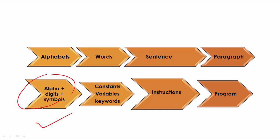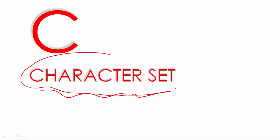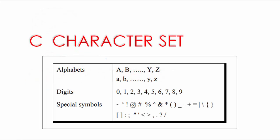So let's start. Alphabets, digits, and symbols are known as the C character set. You can take any C program — these are all the characters we can use in a C program.